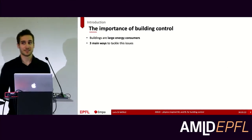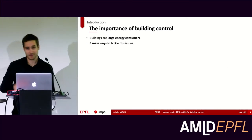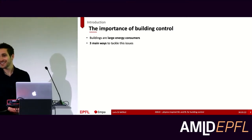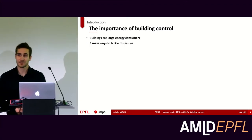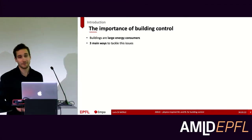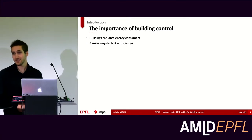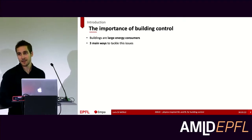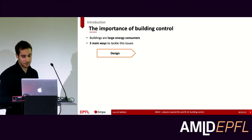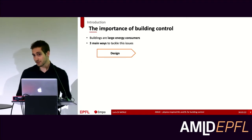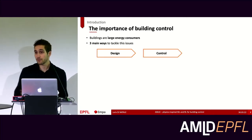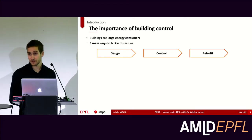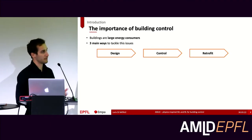In general, there is something that's coming for us called climate change. We have to do something about it and decrease our emissions, which also means decreasing our energy consumption. In Switzerland, buildings consume about 40% of end-use energy, so they're really key players. We need to find solutions, and there are basically three main ways: design better buildings from scratch, improve controllers to make smart buildings, or use retrofit to increase efficiency of older buildings.